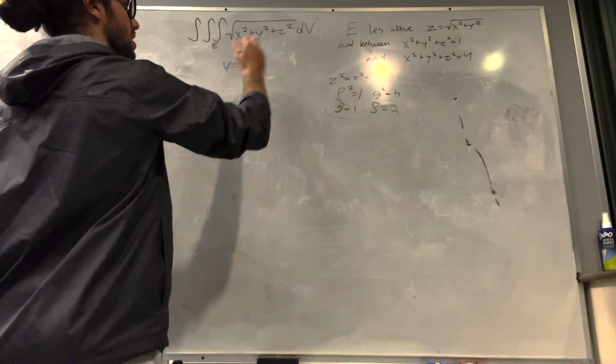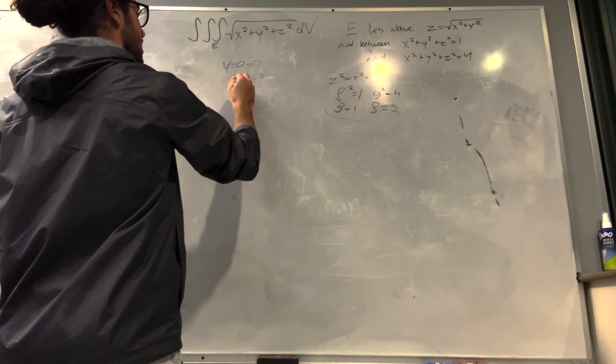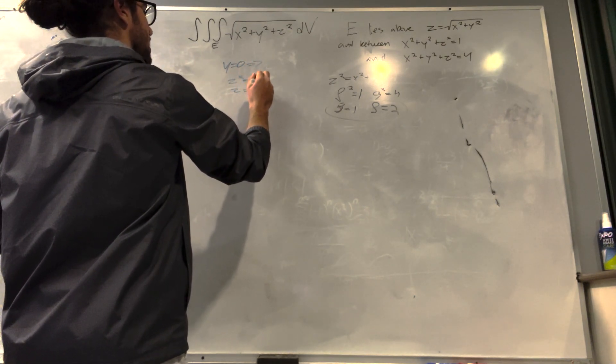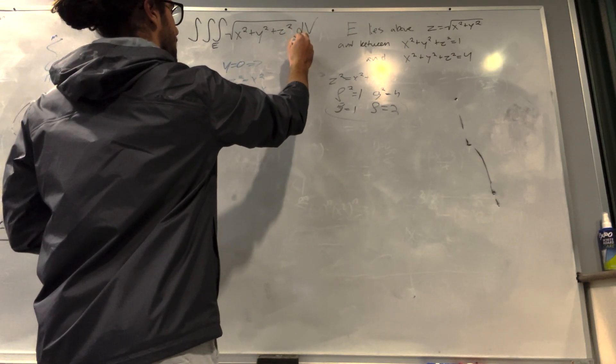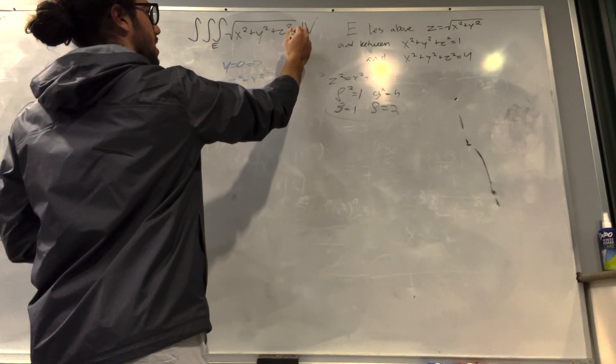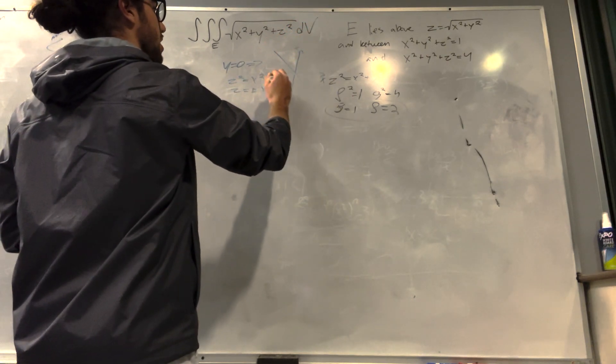Therefore, we have z squared is equal to x squared, or z is equal to positive minus x. Now what this is going to look like, because y is equal to 0, we're going to be in the x-z plane. It's going to look like this.